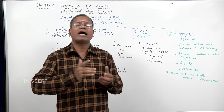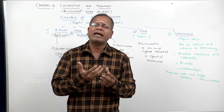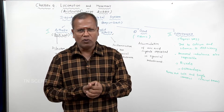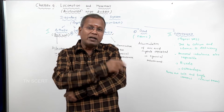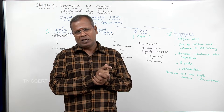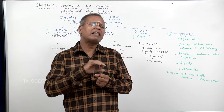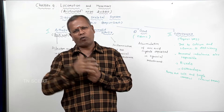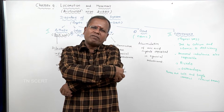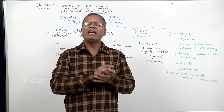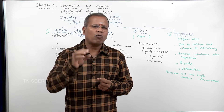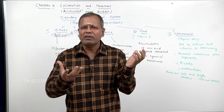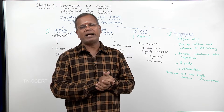Infective arthritis is caused by a pathogen — bacteria, virus, fungi, or other microbes — infecting our joints. If the joints are infected with either virus, bacteria, or fungi, it leads to inflammation of the joints, known as infective arthritis.